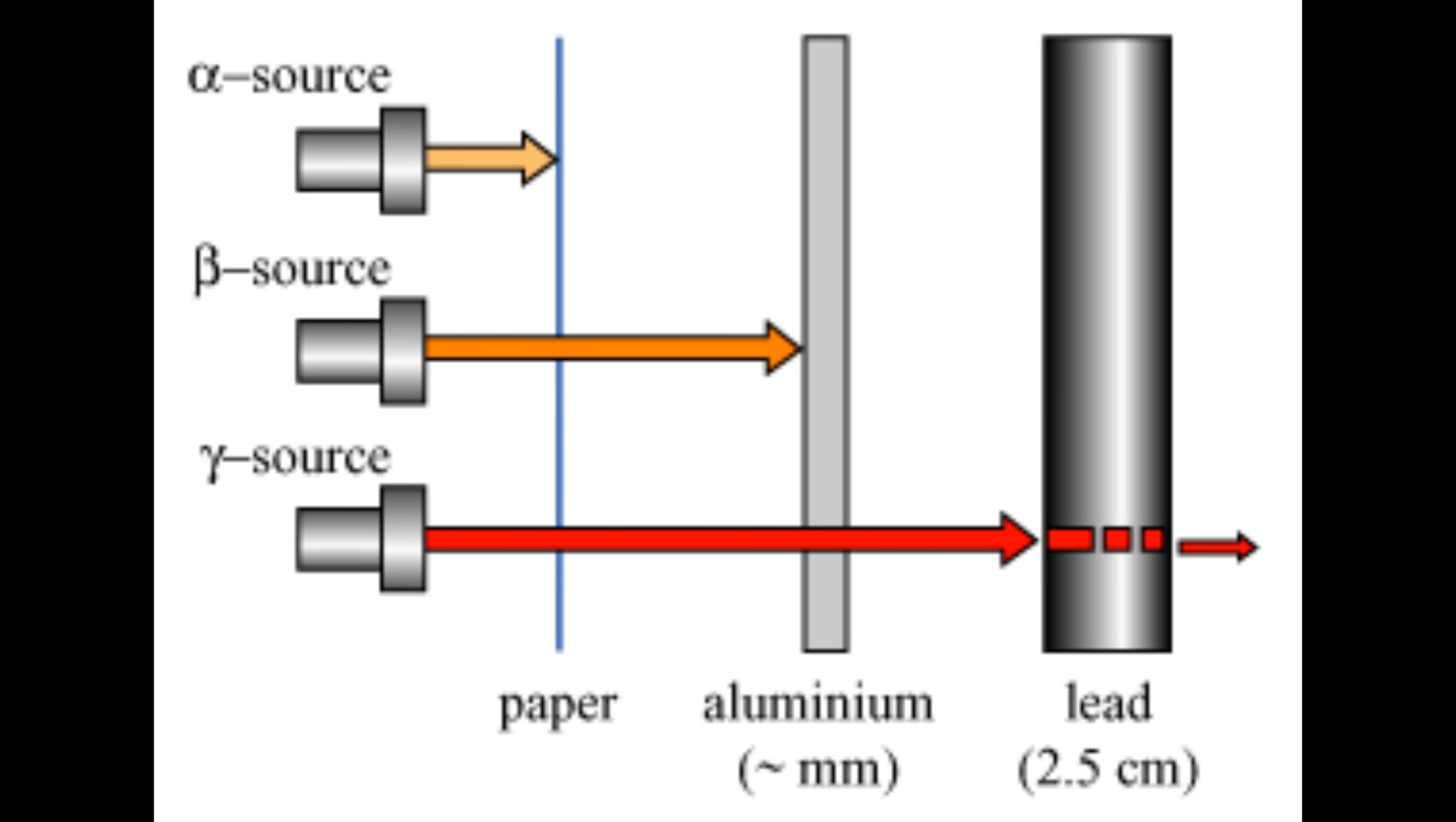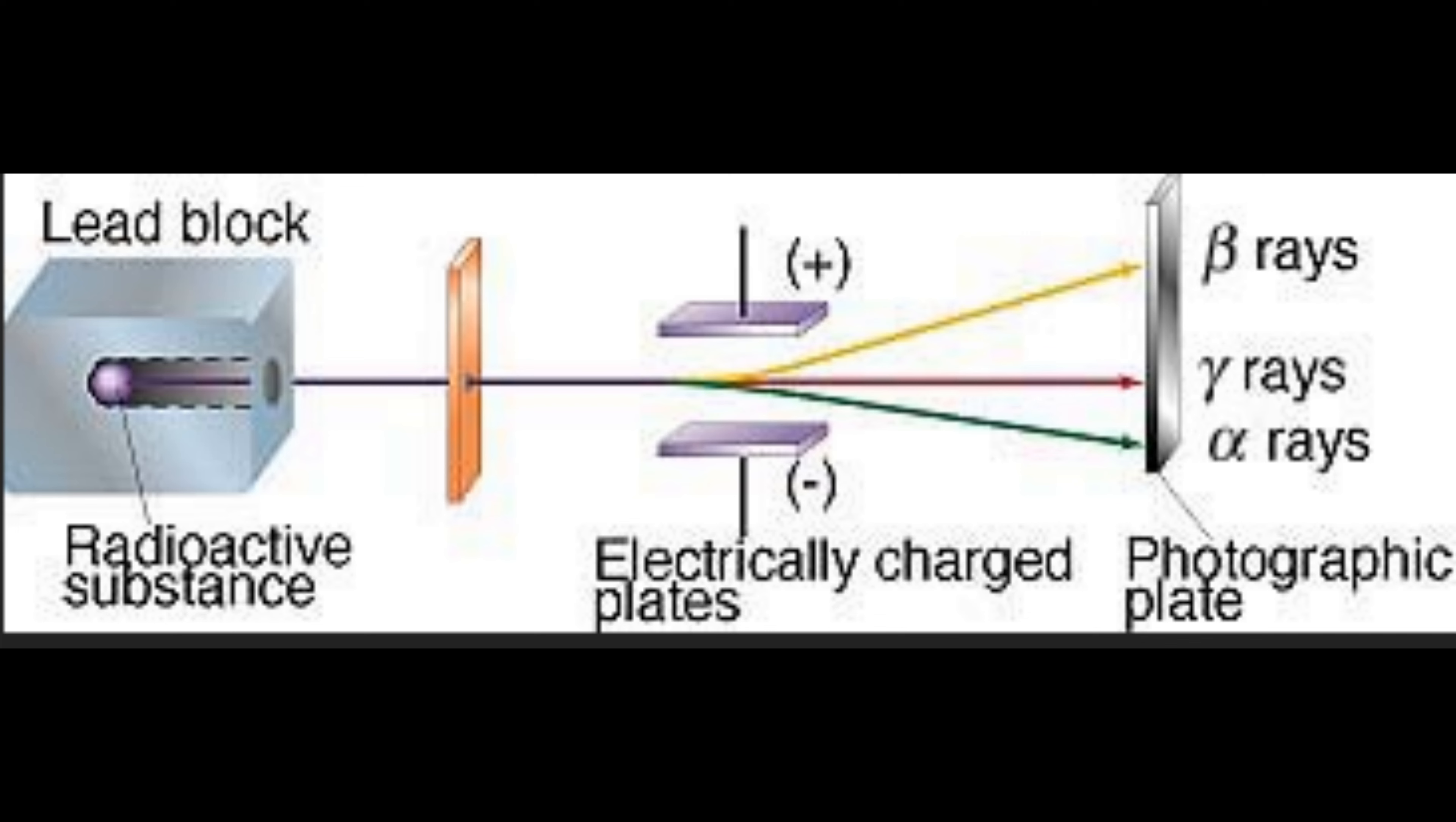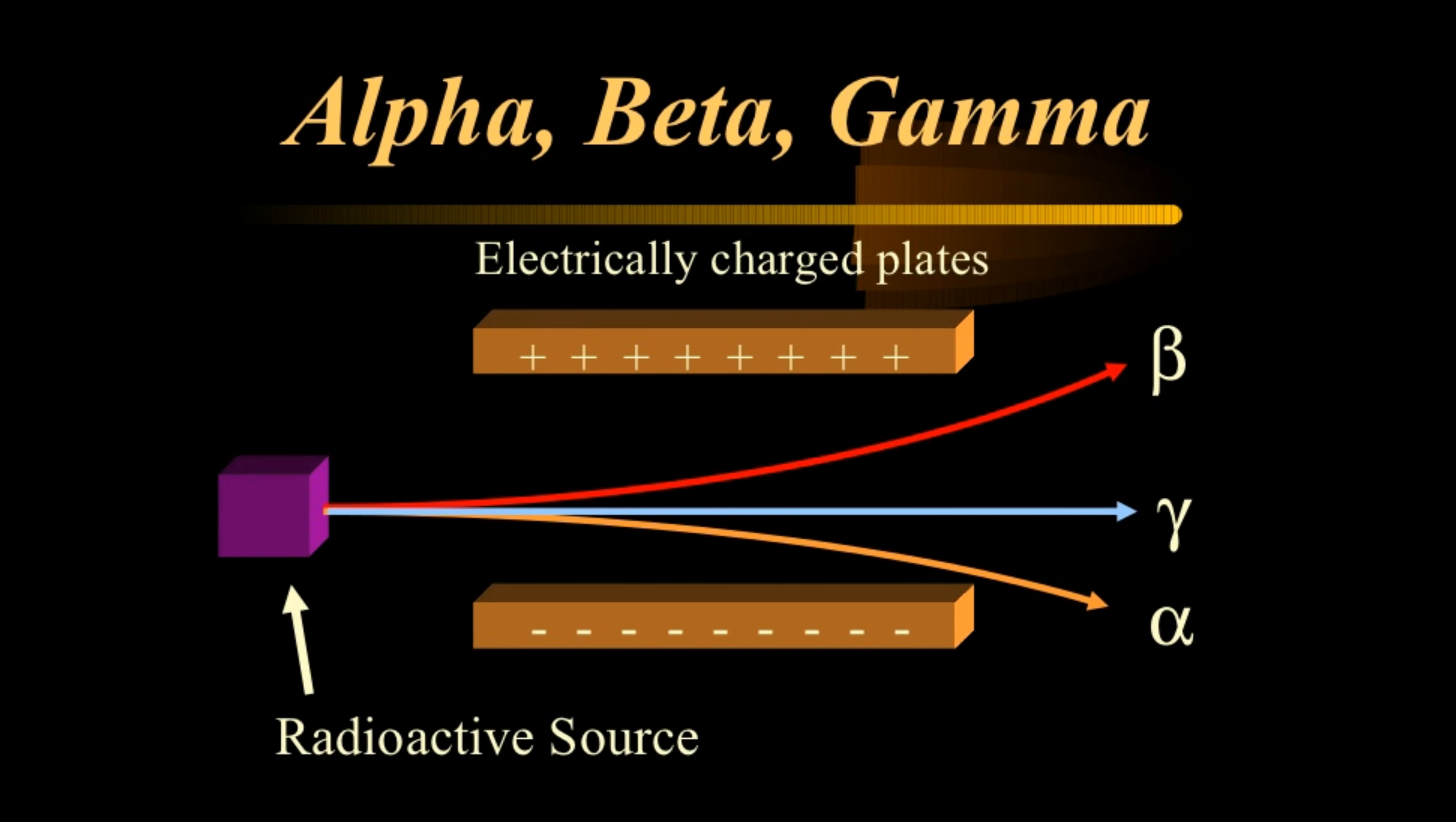Alpha particles have the minimum penetrating power, beta particles have more, and gamma rays have the highest penetrating power. According to Planck's equation, gamma radiations have the highest penetrating power because their frequency is high. We know that energy E equals h times nu, where nu is the frequency. So gamma radiations have very high frequency.